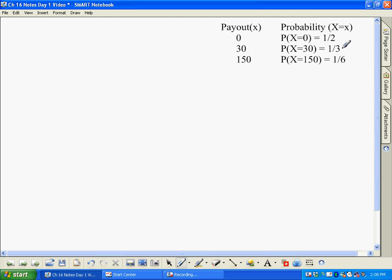A third of the time, which is 2/6, you're going to get $30, and a sixth of the time you're going to get $150. So how do we calculate what we call, once again, expected value?